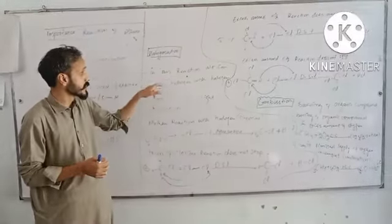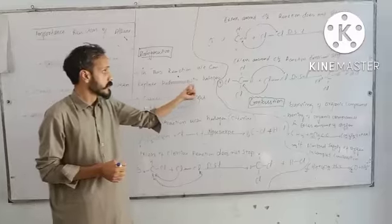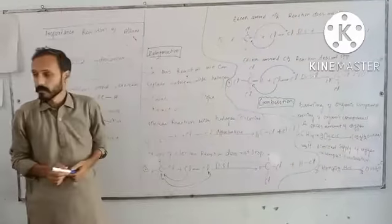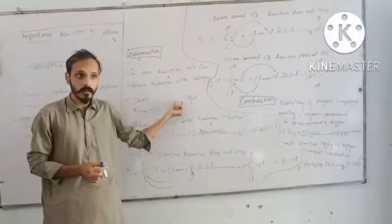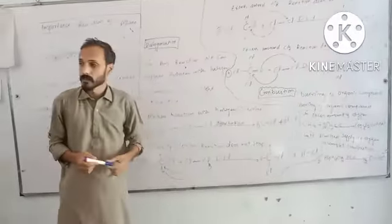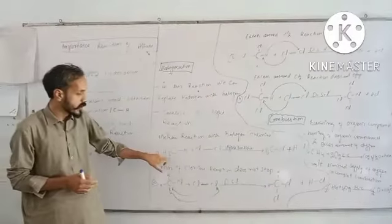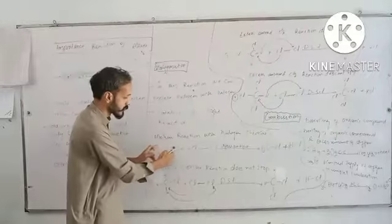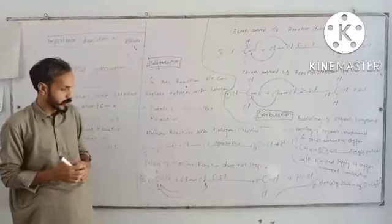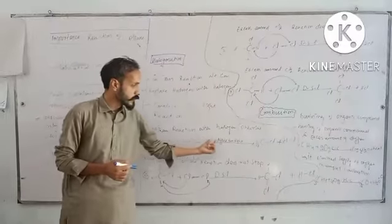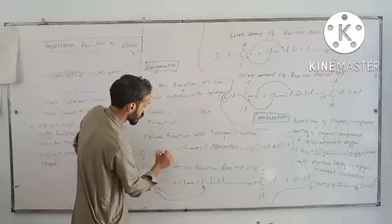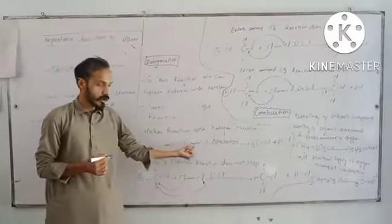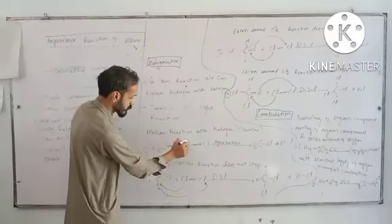In this reaction, we can replace hydrogen with halogen. The halogen is placed with hydrogen. The reaction requires ultraviolet light or sunlight. Let's talk about the methane reaction with halogen. When we see CH4, methane, the reaction is with HCl chloride. When we have sunlight,